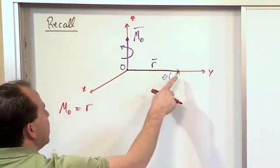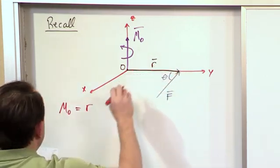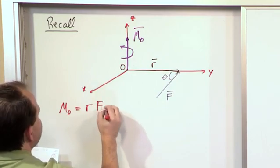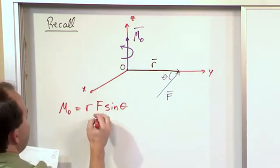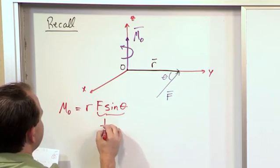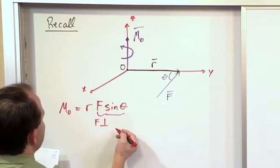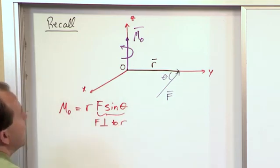It's the distance from here to this point where the force is applied. And we have to take into account the angle. So we say F times sine of theta. This F sine theta is perpendicular, it's F perpendicular to r.